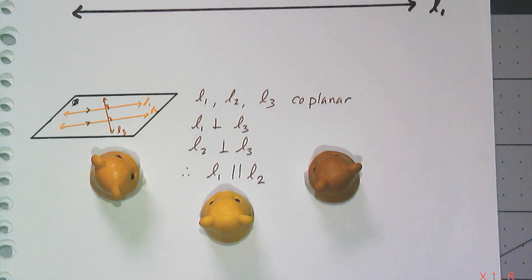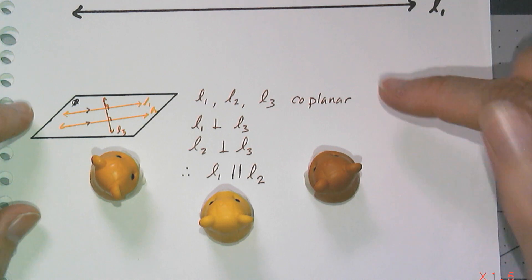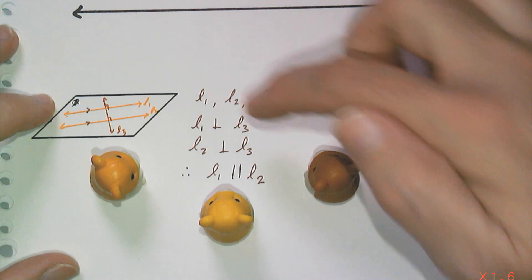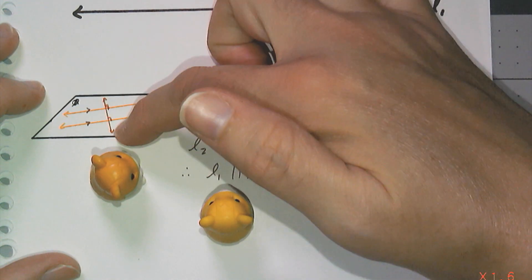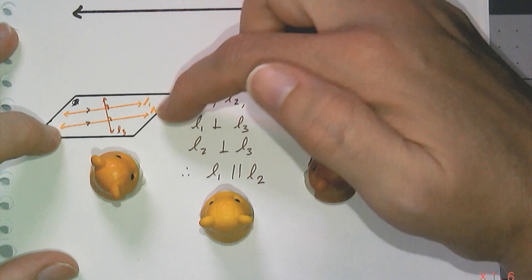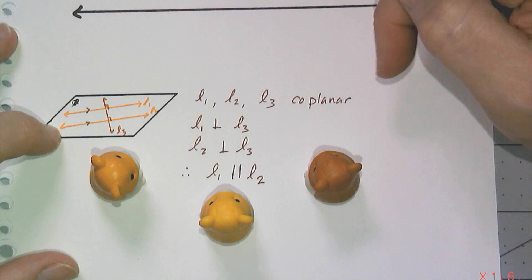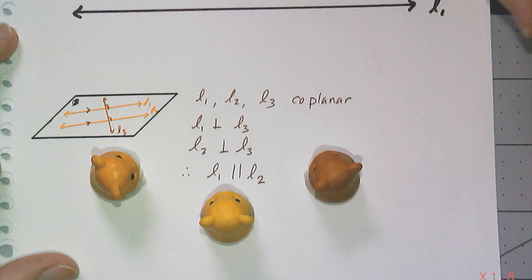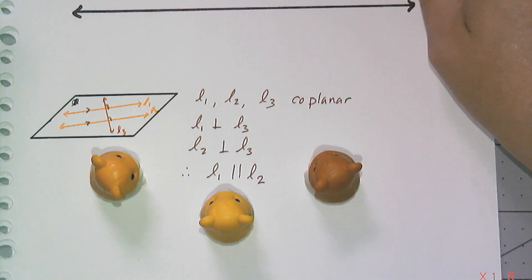So I know from earlier in the year that if I have three lines that are coplanar, line 1, line 2, and line 3, and if line 1 is perpendicular to line 3, and line 2 is perpendicular to line 3, that means line 1 and line 2 have to be parallel to each other. So I'm going to use that fact to do this construction.